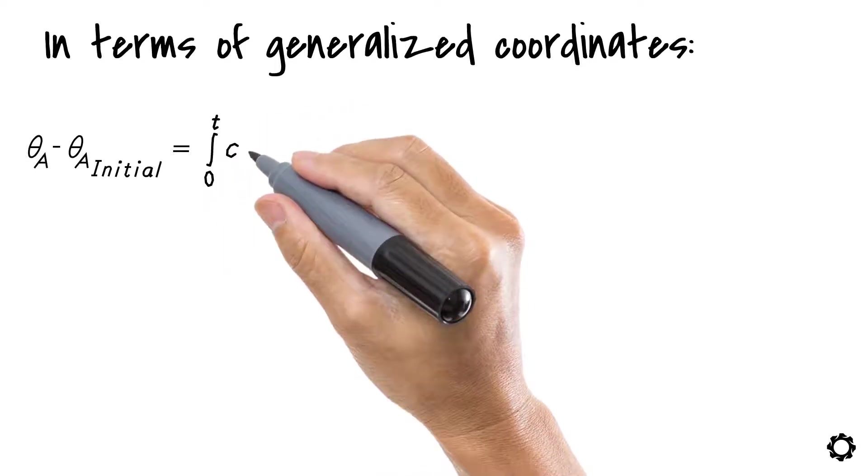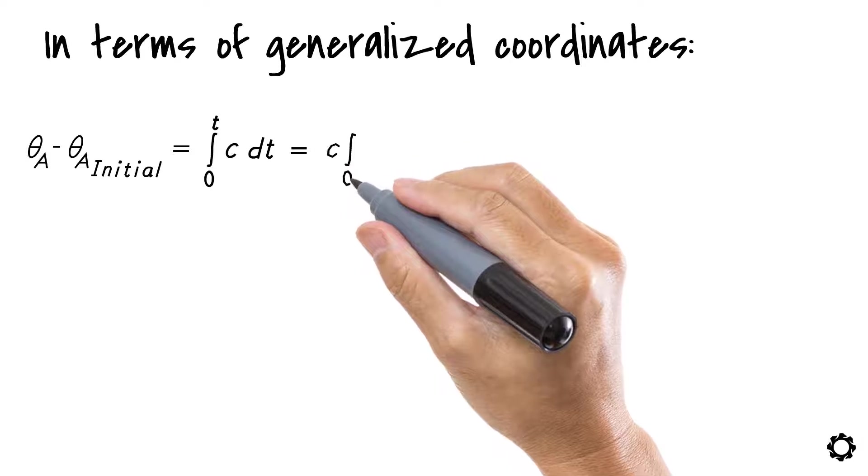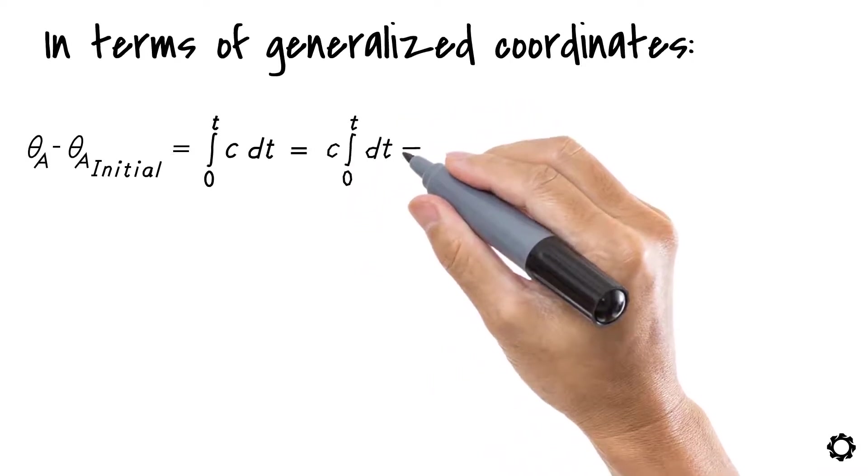c times dt equals c times integration from 0 to t of dt, which equals c times t.